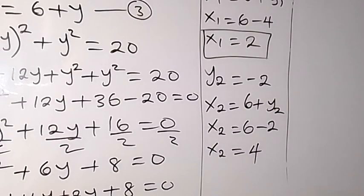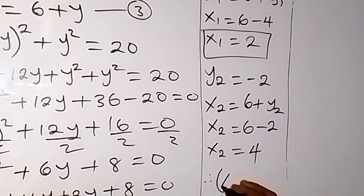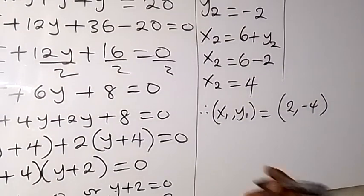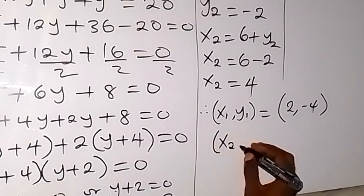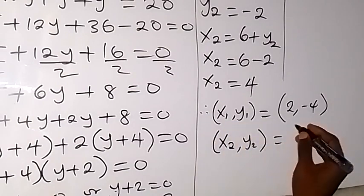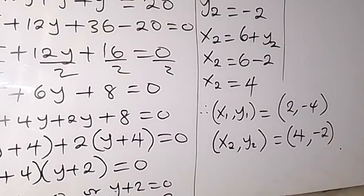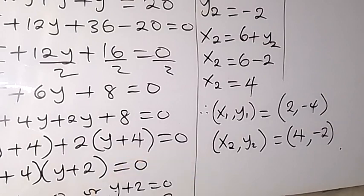We get the second value x2 to be 4. We can conclude: the first set of solutions is x1 equals 2 and y1 equals minus 4. The second set is x2 equals 4 and y2 equals minus 2. These are the sets of solutions to this problem. We can substitute either set into the original equations to verify they satisfy the problem.